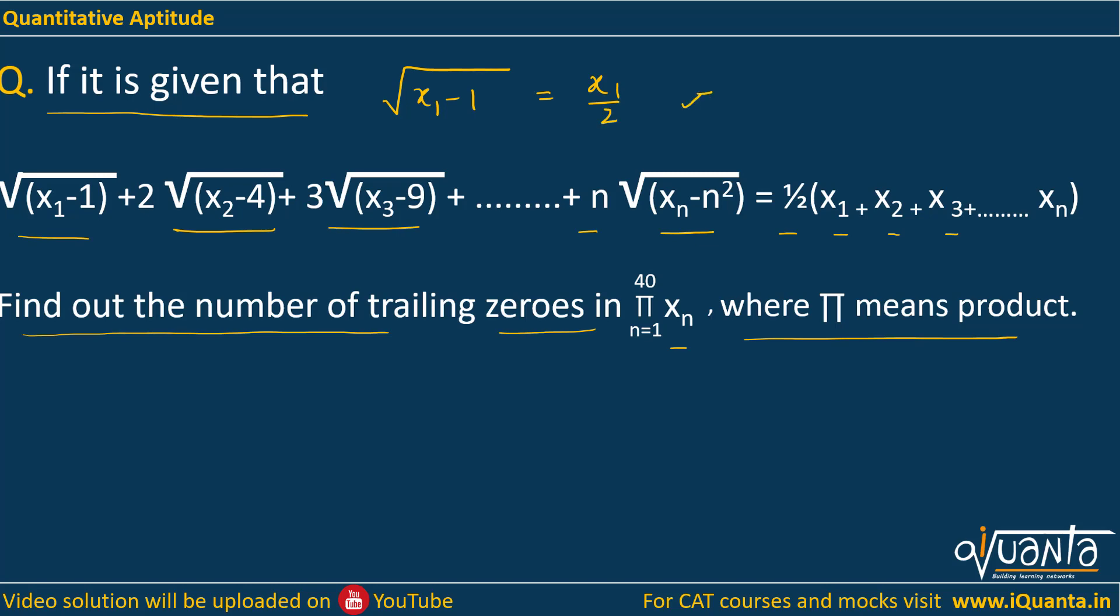If I put x equal to 2, we get 1 in the LHS and 1 in the RHS, so LHS equals RHS. But at the same time if I put 3, in LHS we get √2 and in RHS we get 3/2. So this doesn't hold in this case.